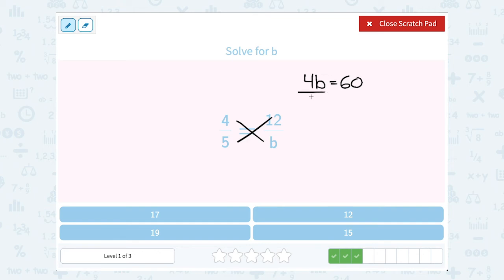To solve for b, I'm going to divide by 4. And that gives me 15. 60 divided by 4 is 15.